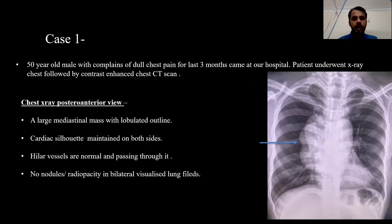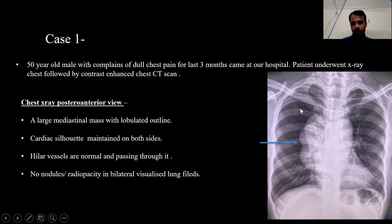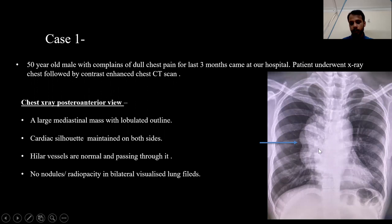Starting the cases. This is the first case of a 50-year-old male with a complaint of chest pain for the last three months. The patient underwent X-ray. On the chest X-ray PA view, we can see there is a large mass with a well-defined outline, surrounded by lung on one side. We can see the hilar vessels are clearly seen passing through the mass, along with the cardiac borders which are clear and not obscured by the mass. This gives an impression of a posterior mediastinal mass.